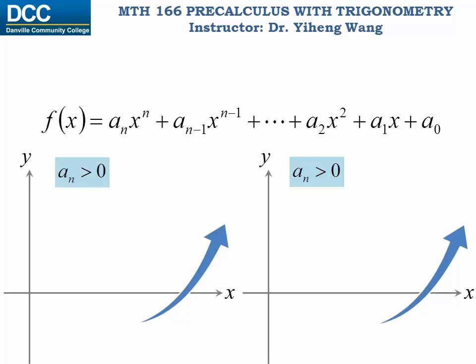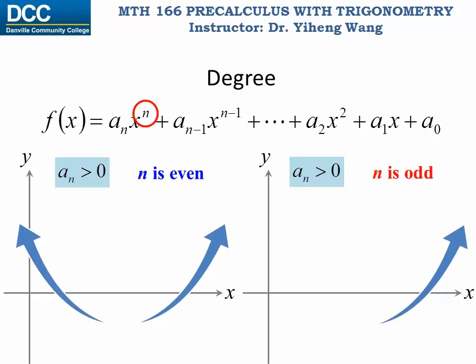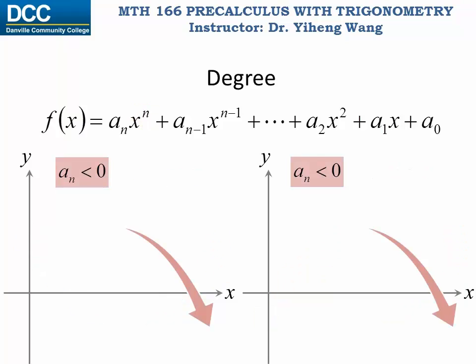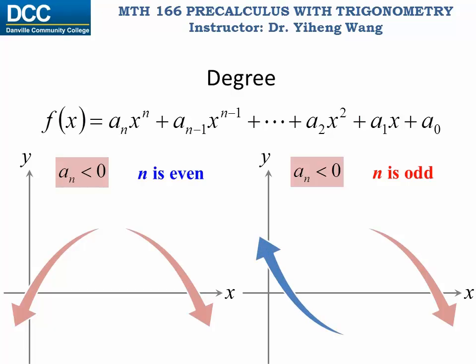Next we look at the degree n of the function. If the degree is an even number, the left tail goes to the same side as the right tail. If the degree is an odd number, the left tail goes to the opposite side of the right tail.